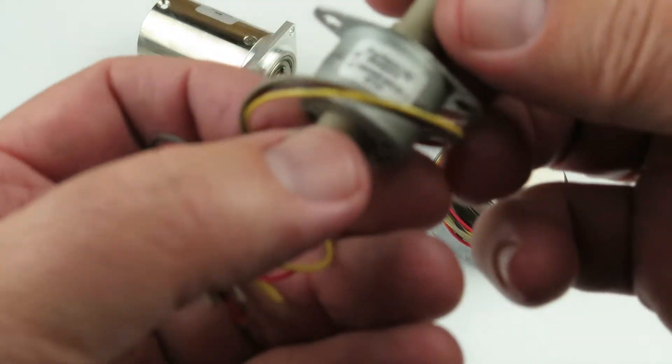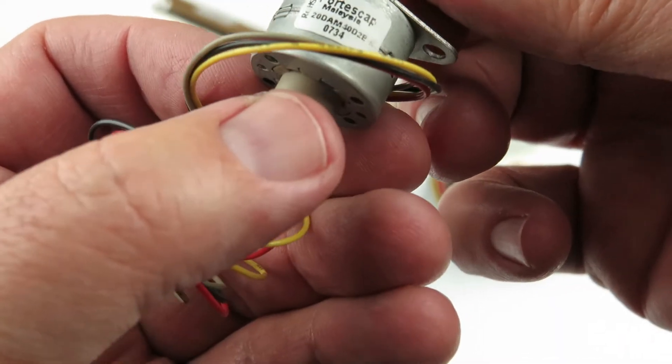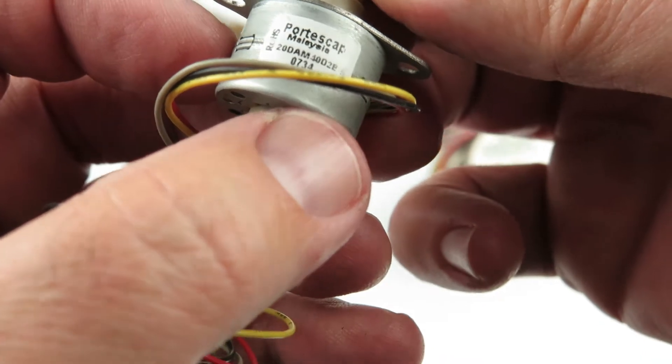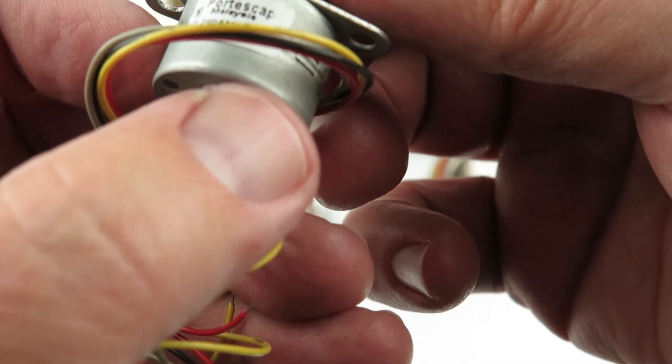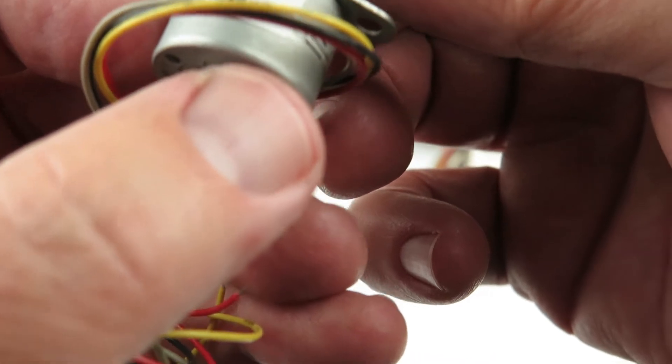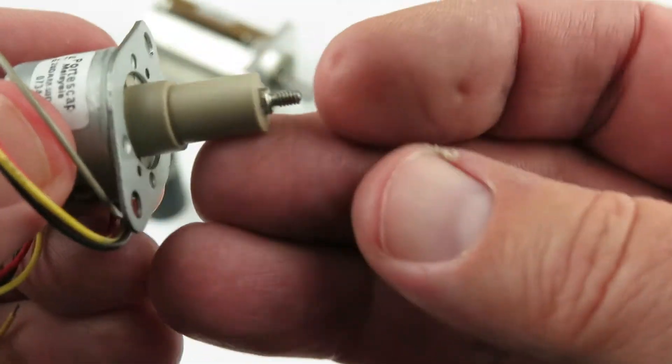There's a little mini. This one right in here, ROHS. 20DAM, 40D2E, something like that. This one has a little threading right there.